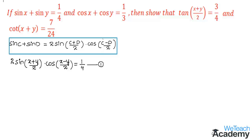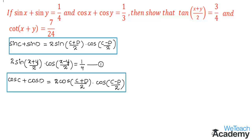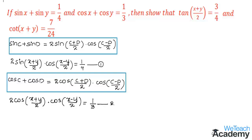Now let us expand the second equation. It is in the form of the formula cos C plus cos D equals 2 cos((C+D)/2) into cos((C−D)/2). Using this formula we get 2 cos((x+y)/2) into cos((x−y)/2) equals 1 by 3. Let us name this as equation 2.